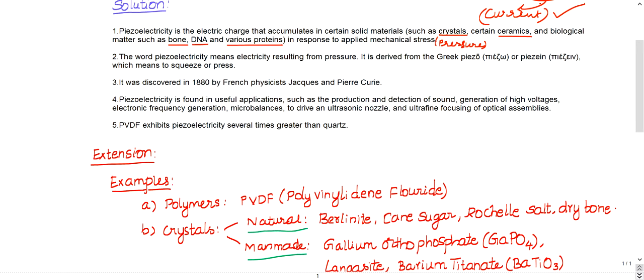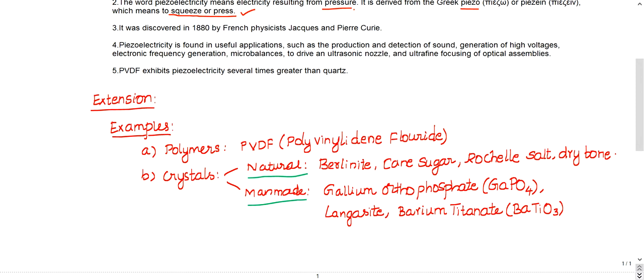The word piezoelectricity means electricity resulting from pressure. It's a Greek word actually. Piezo means pressure - P-I-E-Z-O - which means squeeze or press. It was discovered in 1880 by French physicists Jacques and Pierre Curie.